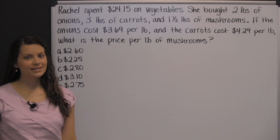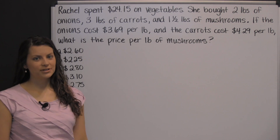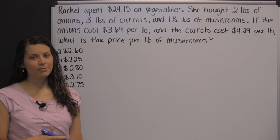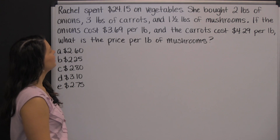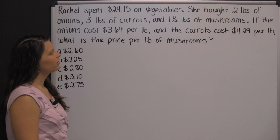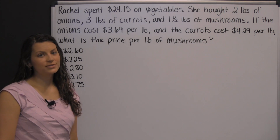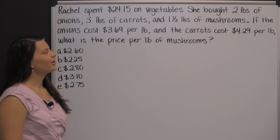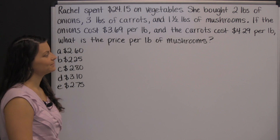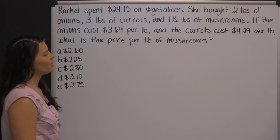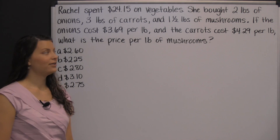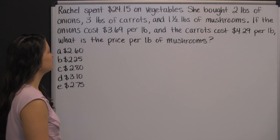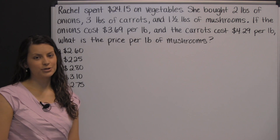If you're planning to take the HiSET, then plan to work some word problems. Here's an example: Rachel spent twenty-four dollars and fifteen cents on vegetables. She bought two pounds of onions, three pounds of carrots, and one and a half pounds of mushrooms. The onions cost three dollars and sixty-nine cents per pound, and the carrots cost four dollars and twenty-nine cents per pound. What is the price per pound of mushrooms?